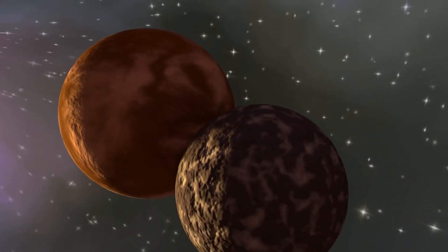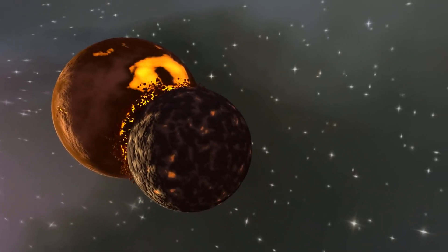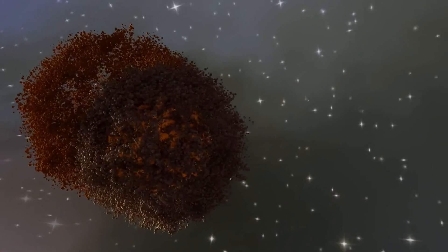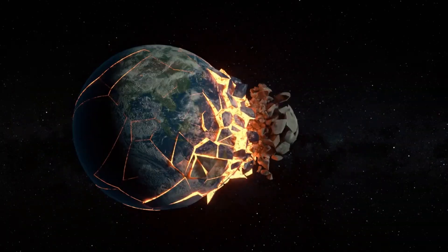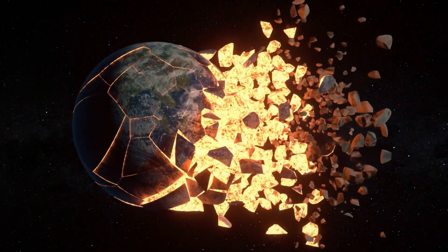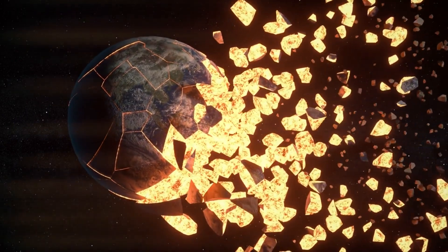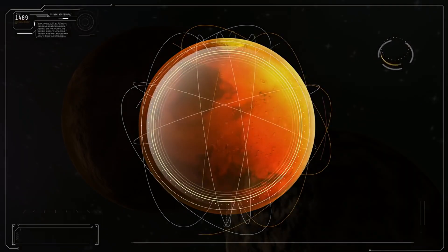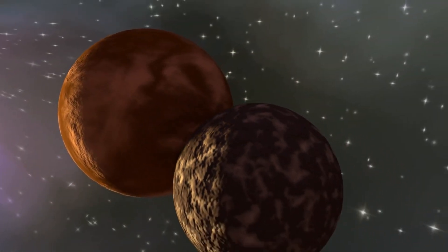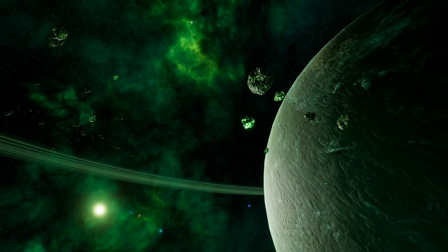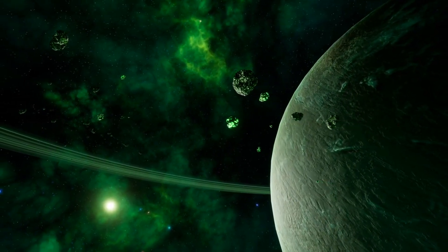Imagine a moment not too far in the distant future when two of the most iconic planets in our solar system, Mercury and Venus, collide in an event that shatters everything we know about planetary science. But how could this happen? What would the aftermath look like? And most chillingly, what would it mean for the entire solar system?